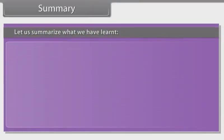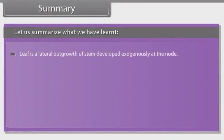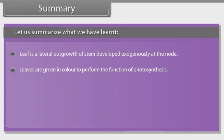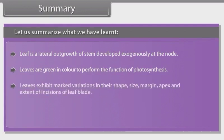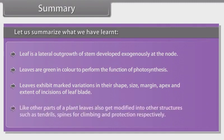Summary. Let us summarize what we have learned. Leaf is a lateral outgrowth of stem developed exogenously at the node. Leaves are green in color to perform the function of photosynthesis. Leaves exhibit marked variations in their shape, size, margin, apex, and extent of incisions of leaf blade. Like other parts of a plant, leaves also get modified into other structures such as tendrils and spines for climbing and protection respectively.